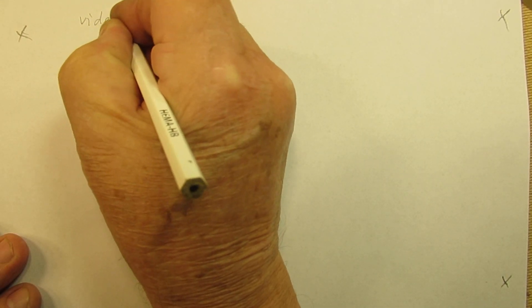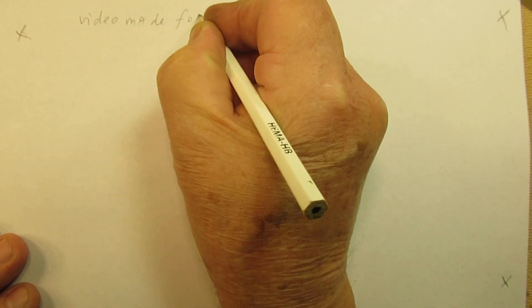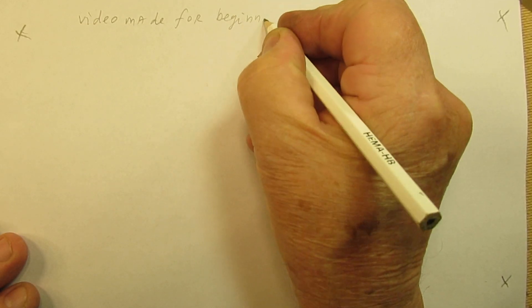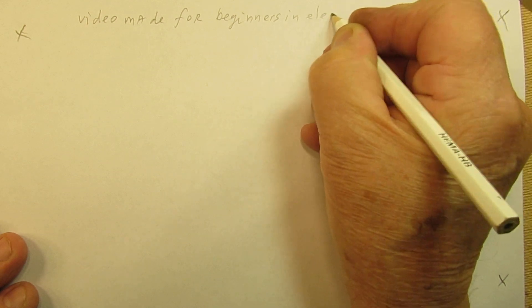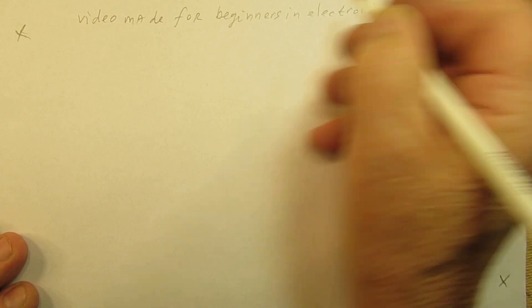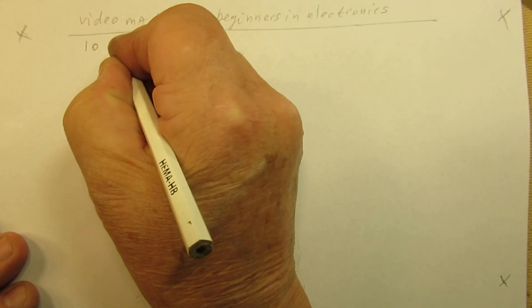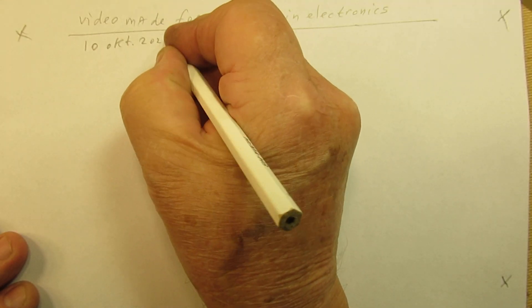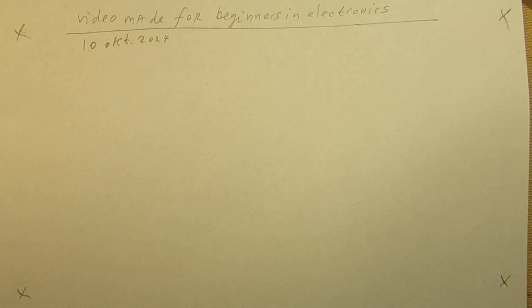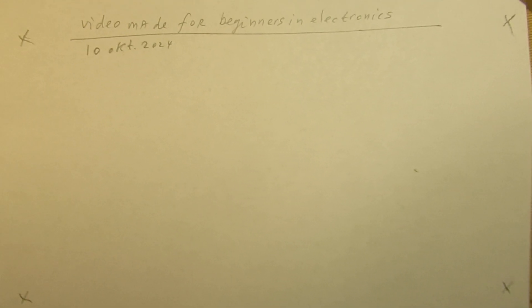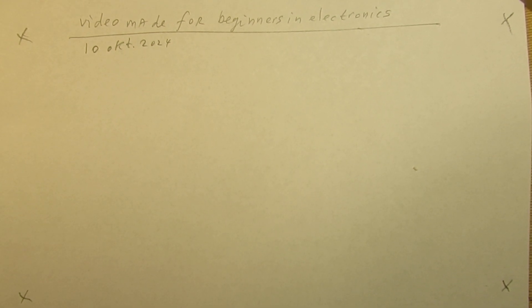A video made for beginners in electronics. Well, at first I have to see whether you can see it. Look at my camera, move it a little bit. Anyway, I only want to focus now on the most simple electronic circuits that everyone can make.